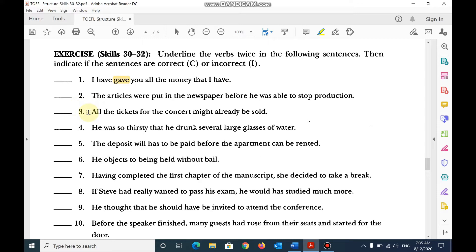Number 3, all the tickets for the concert might already be sold. Might already be sold, correct? Number 4, he was so thirsty that he drank. He drank, incorrect.